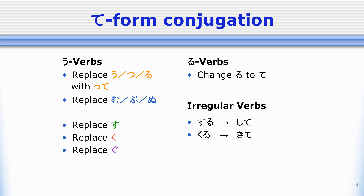If the verb ends in mu, bu, or nu — for example, yomu, asobu, or shinu — then we're going to change that last mu, bu, or nu to nde. So for example, yomu becomes yonde, asobu becomes asonde, and shinu becomes shinde.